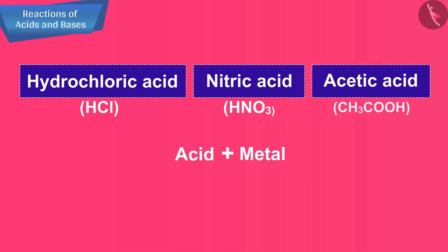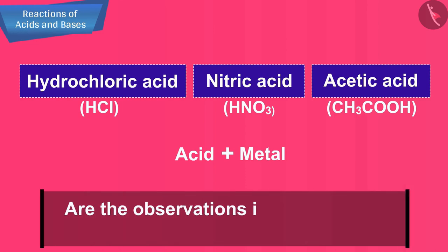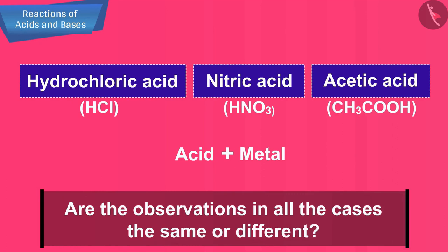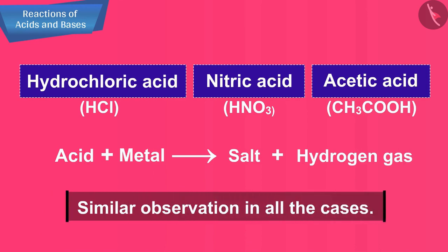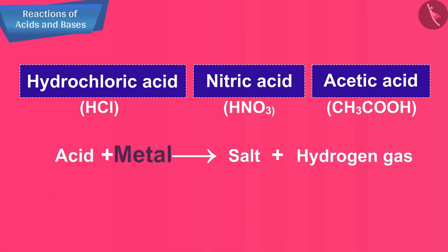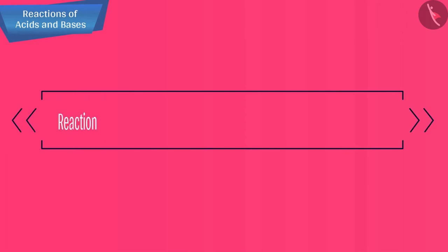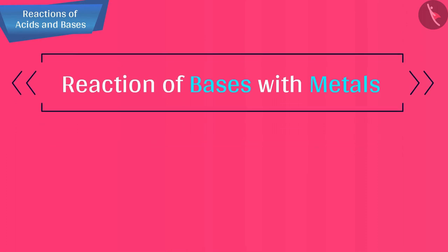Repeat this activity with more acids like hydrochloric acid (HCl), nitric acid (HNO₃), and acetic acid (CH₃COOH). You will observe similar observations in all the cases. Therefore, we can conclude that a metal reacts with acids to form a salt and hydrogen gas.